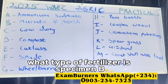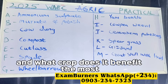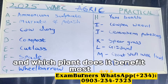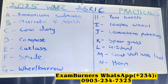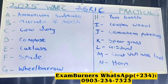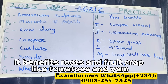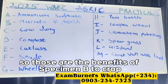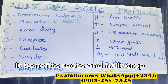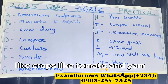What type of fertilizer is specimen B and what crop does it benefit the most? Specimen B, muriate of potash, is an inorganic fertilizer. It benefits roots and fruit crops like tomatoes and yam. So those are the benefits of specimen B — it is an inorganic fertilizer that benefits root and fruit crops like tomato and yam.